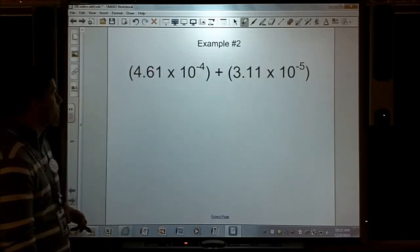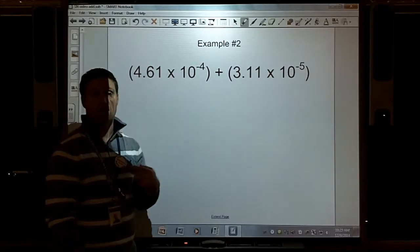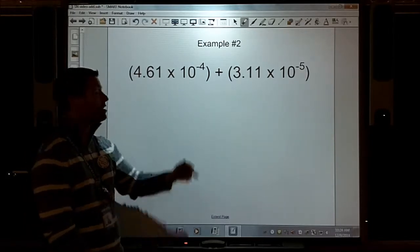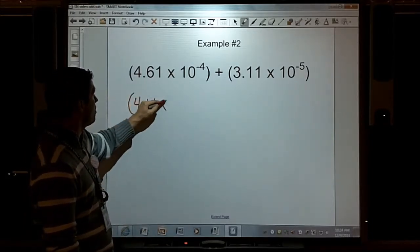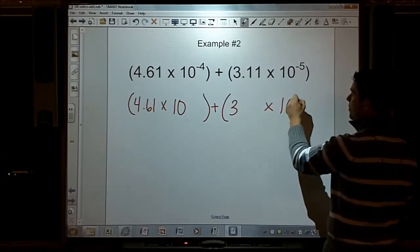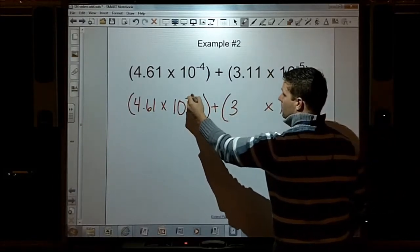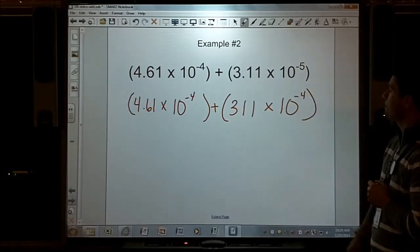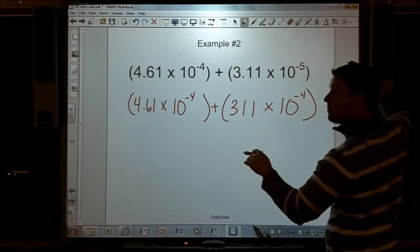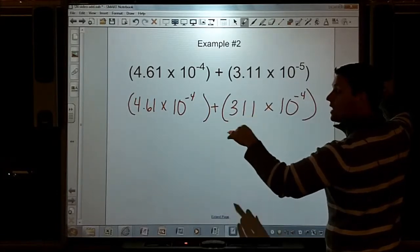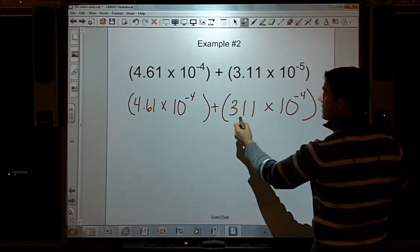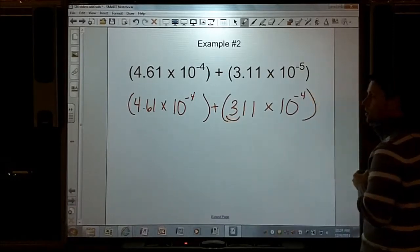Let's look at another one. Example 2: 4.61 times 10 to the negative fourth plus 3.11 times 10 to the negative fifth. Well they're not the same, but I need to choose one exponent that I'm going to use for both of these. I'm going to make both of them times 10 to the negative fourth. 10 to the fifth is lower than this, so the exponent went up. The number has to go down by a factor of 10, so instead of 3.11, it's now .311.